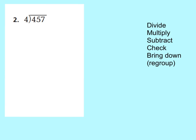Our first question is number 2 in our GoMath book: 457 divided by 4. Now I want you to look at this and see that we have 4 groups of 100, 5 tens, and 7 ones. So we're going to start out by dividing our 4 groups of 100.